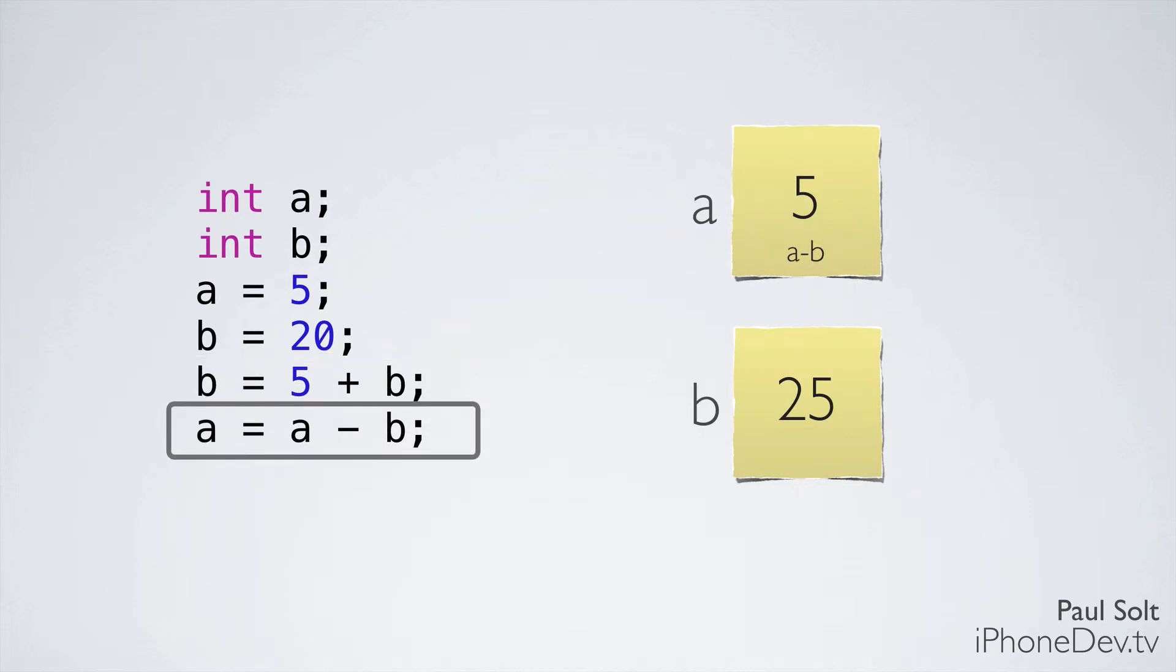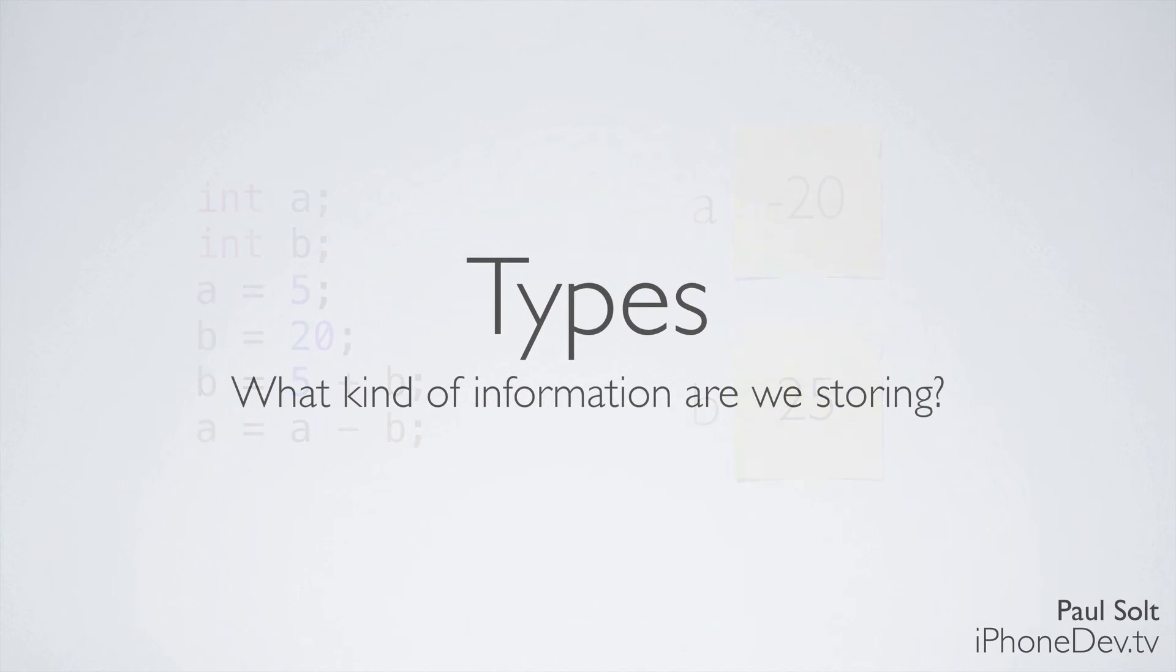The next line we have is A minus B. We substitute in the values that are currently available, so we have 5 minus 25, which results in negative 20. This is exactly how your computer will evaluate these lines of code. When you write something, it's evaluated sequentially. It starts with the first line and goes all the way to the end.